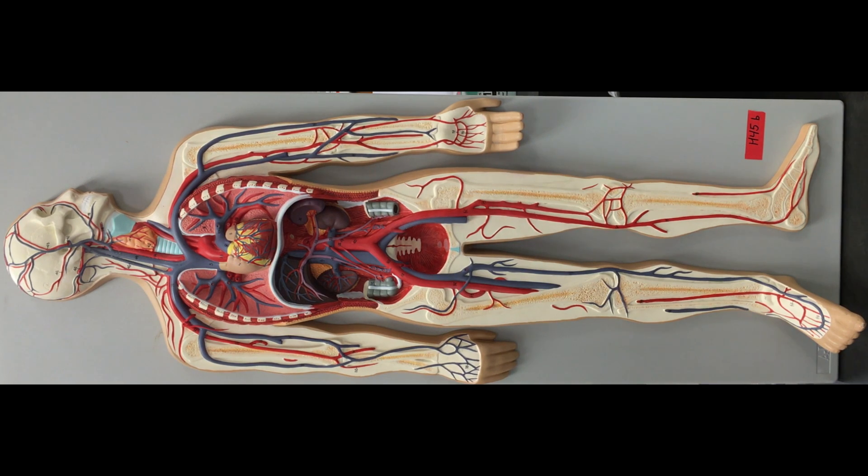This is going to be tutorial number two of our blood vessels and vasculature tutorial. The one before this was veins. This one's going to be arteries. We're going to start in the same place right above the heart that we did with veins, except we're going to continue with the arterial system.